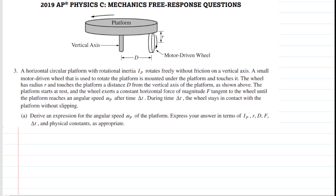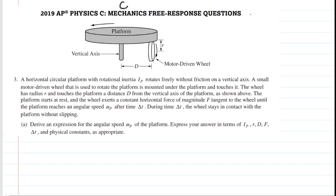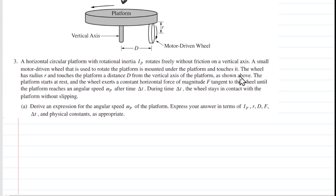You might want to pause the video and read the problem over a couple of times, maybe even try to solve Part A on your own before listening on. In Part A, we are asked to derive an expression for the angular speed of this platform. In order to help us understand how to derive this expression, we're going to take a look at the platform from an overhead perspective — looking down on a circular cross-section. So we're going to redraw the platform from that perspective.